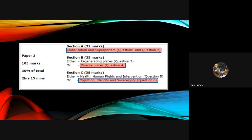Be careful here because you get a choice of questions: either regenerating places which is question 3, or diverse places which is question 4. For all of you at Samuel Whitbread, you need to be answering question 4, diverse places, because that is what we have studied. Ignore regenerating places.